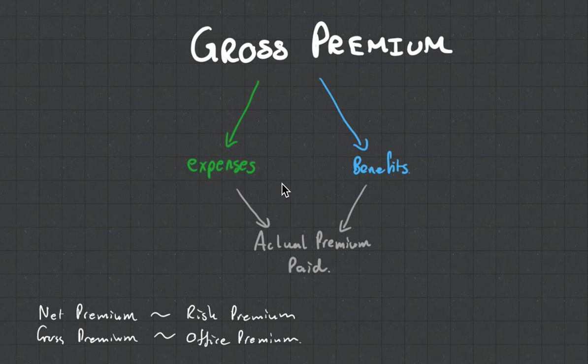The gross premium is the premium that is actually paid by the policyholder. What it incorporates is the benefit as well as the expenses. The expenses I spoke about in the previous video, and the benefits is what we've done before with the net premium. So the gross premium incorporates both of these things. Because it includes expenses as well, it will be higher than the net premium.